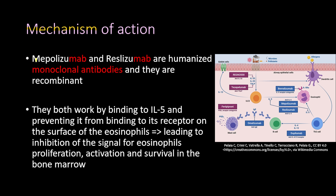Mepolizumab and reslizumab are both humanized monoclonal antibodies. A monoclonal antibody is an antibody derived from a cloned unique white blood cell. The last three letters in both of their names — the 'mab' — refer to monoclonal antibody: 'm' for monoclonal and 'ab' for antibody. Both of these are recombinant, meaning they are made by a DNA recombination method.